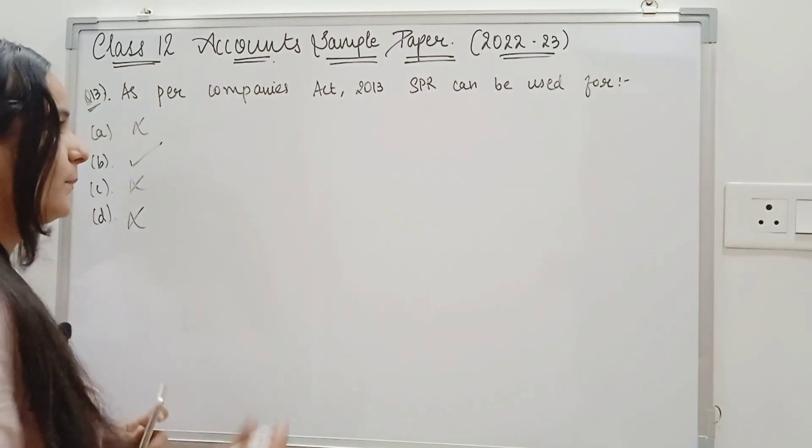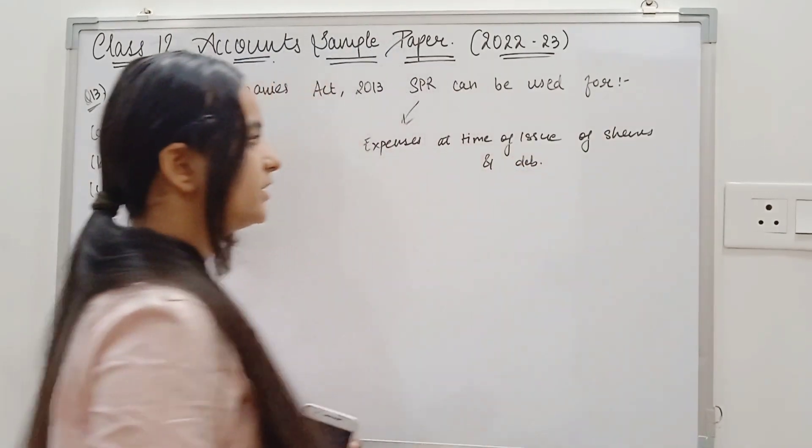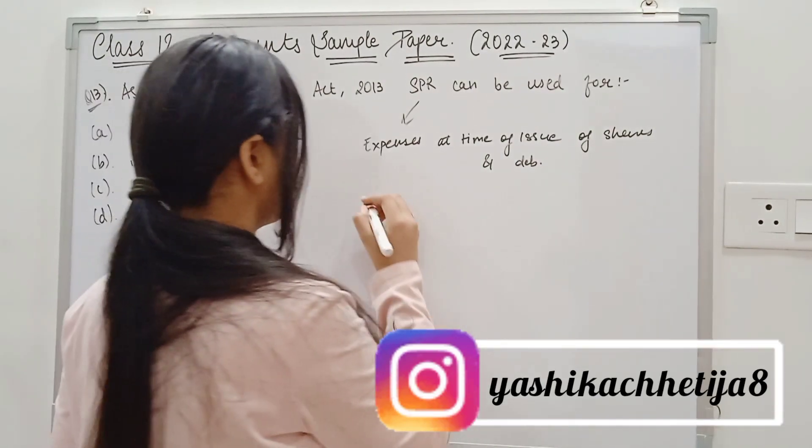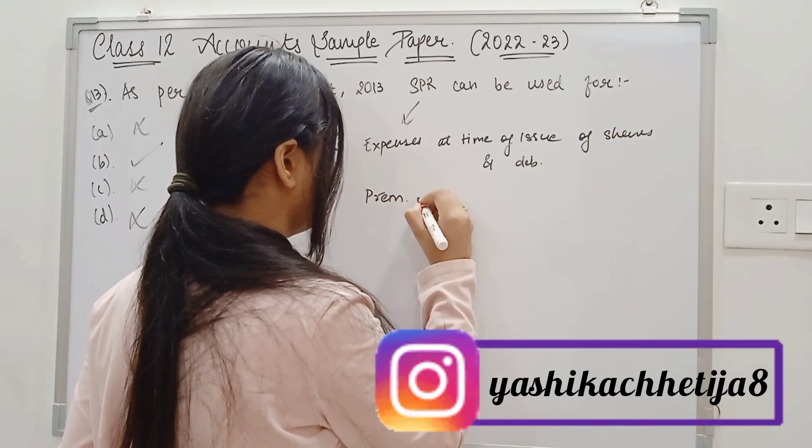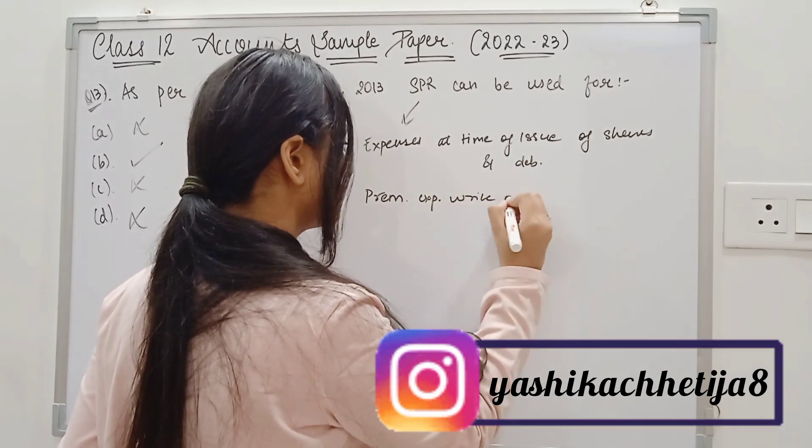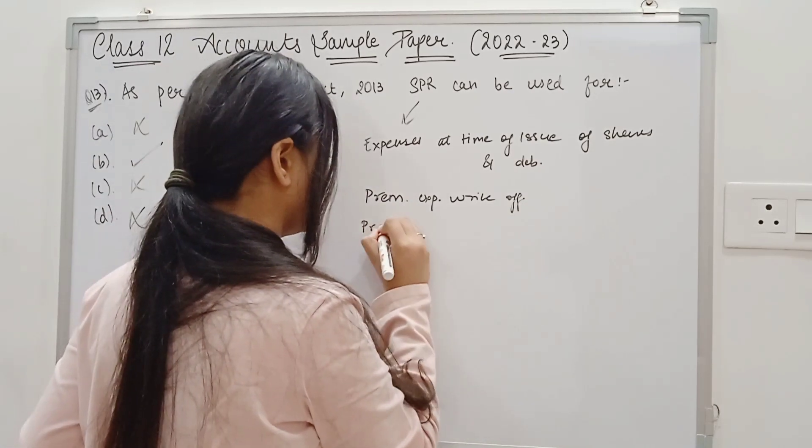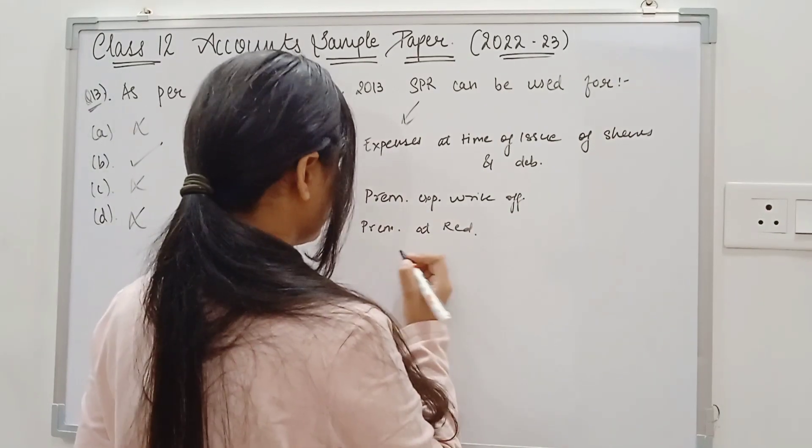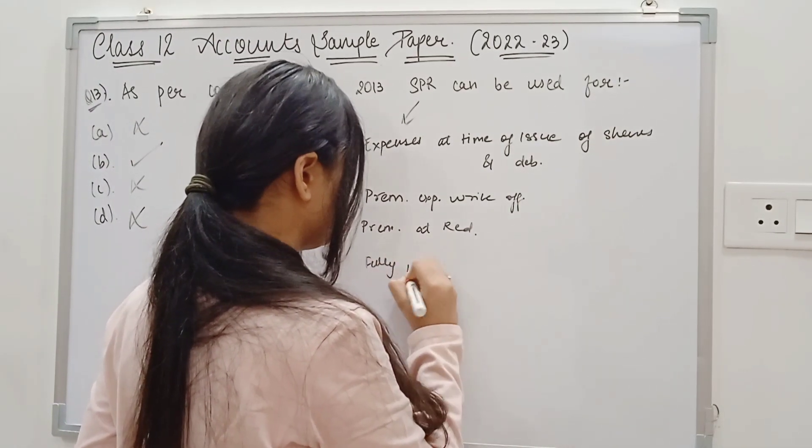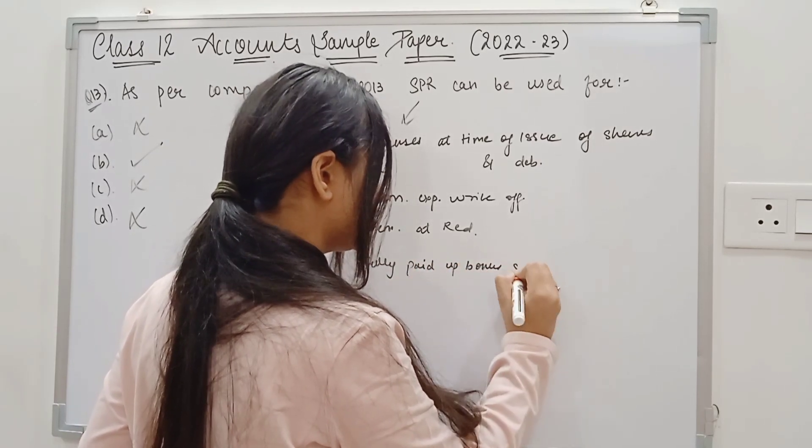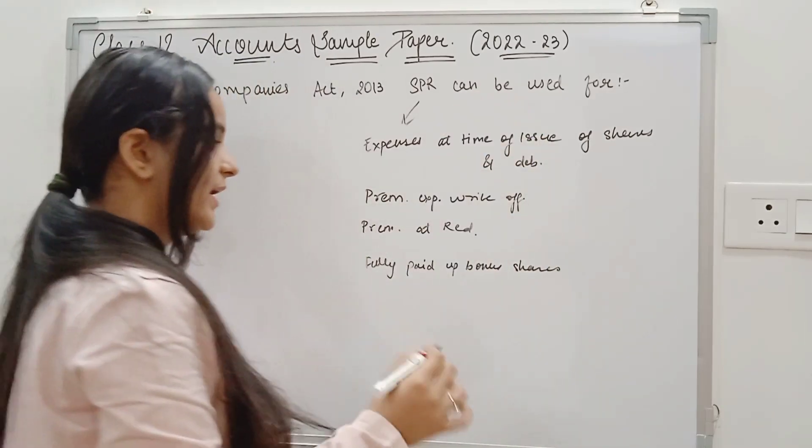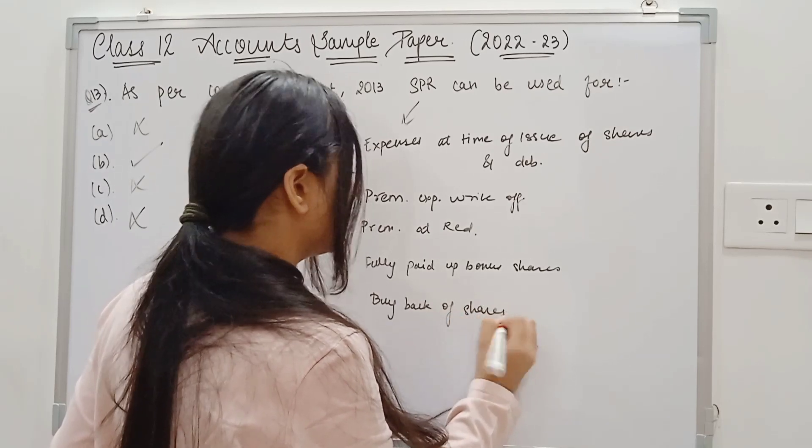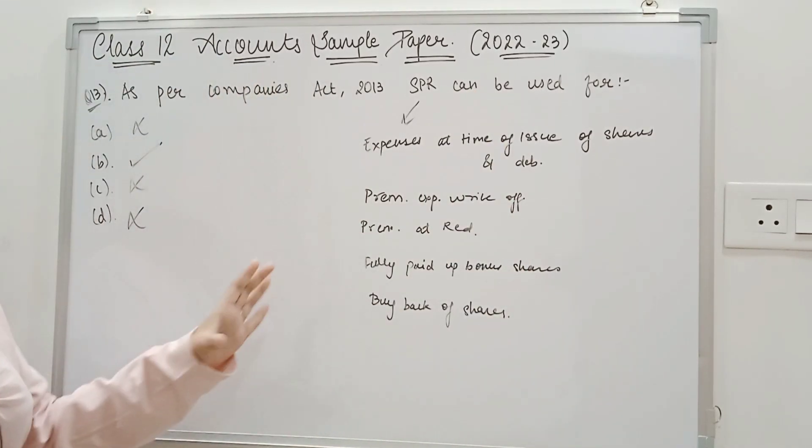So first, SPR is used for 5 purposes. When you issue debentures or shares, there is discount on issue of shares or debentures. We can use SPR for premium expenses to write off. And at the last, buy back of shares. If we buy back of shares, we can use SPR. So for these 5 purposes, we can use SPR.